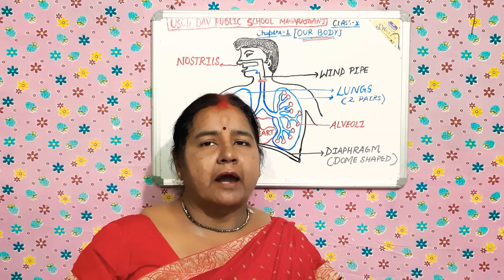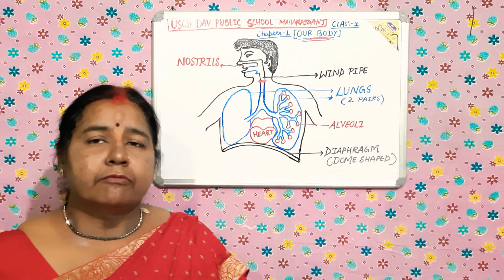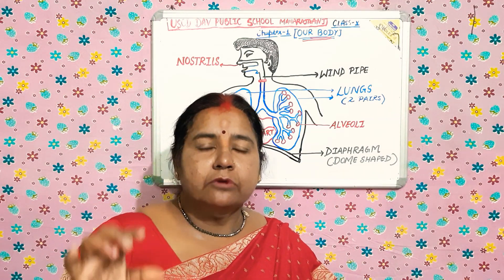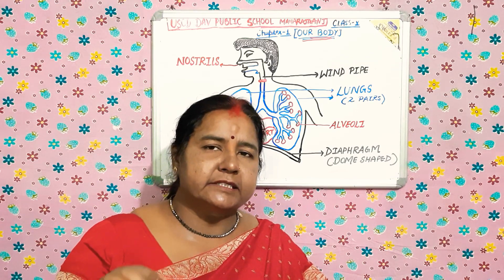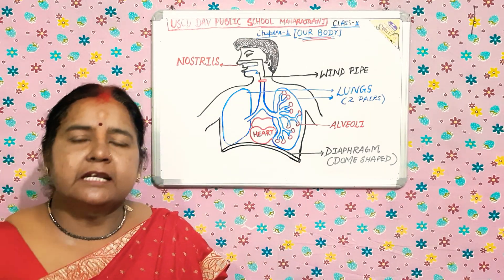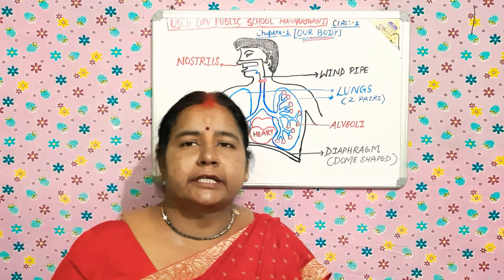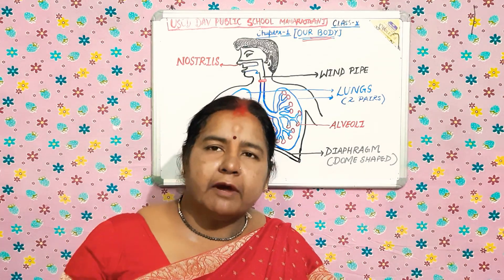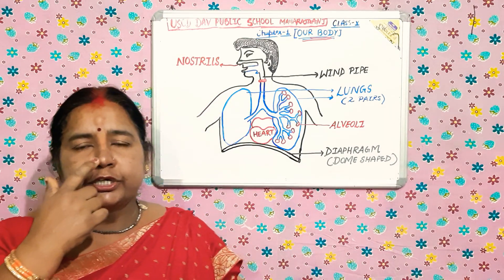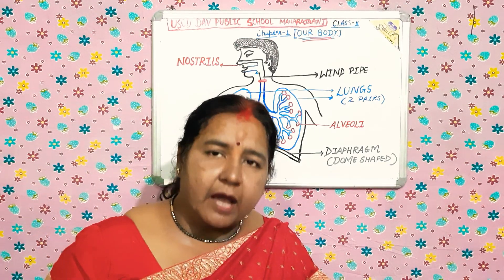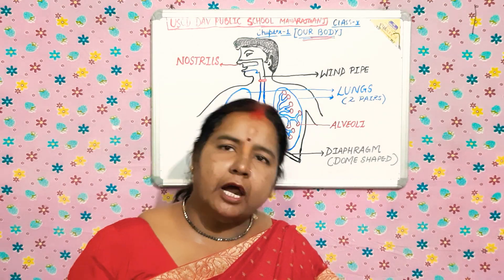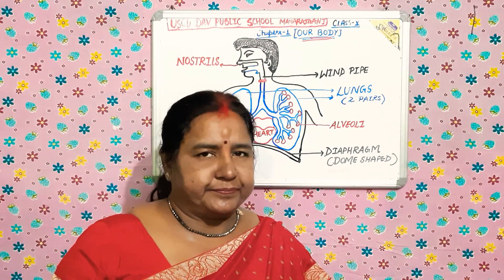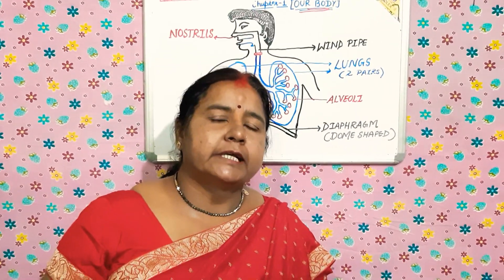The internal parts are the organs. What is an organ? An organ is a special structure present inside our body which performs a special function. And many organs combine together to form a system, and that system is responsible for a particular function. Now, we have to read about the breathing system.